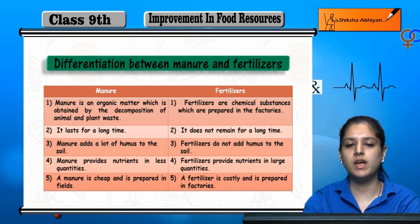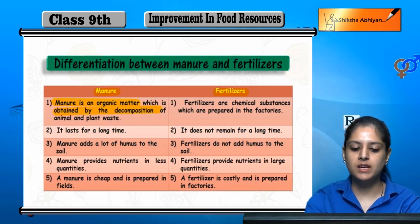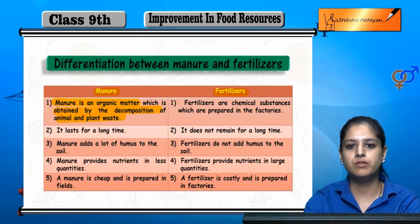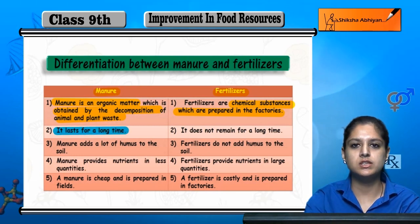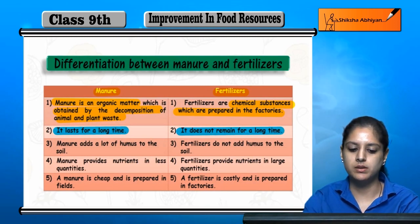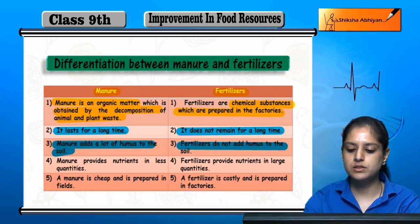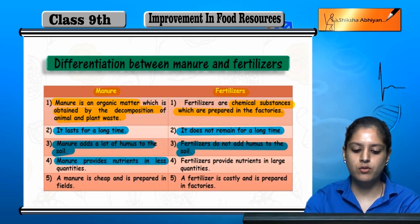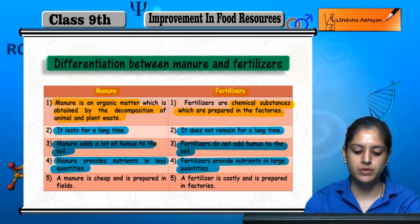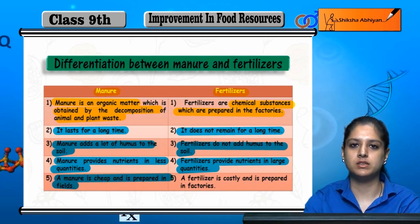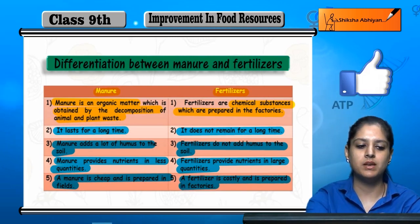Now let us see the difference between manure and fertilizer. Manure is organic and comes from animal and plant waste decomposition. Fertilizers are chemical substances made in factories. Manure improves soil over a long time and increases water content in soil. Fertilizers provide nutrients in concentrated quantities. Manure is prepared in the field at low cost, but fertilizers are costly and made in factories.